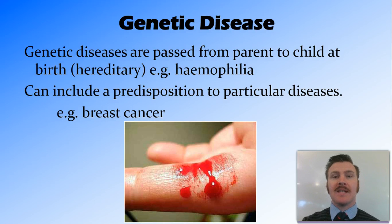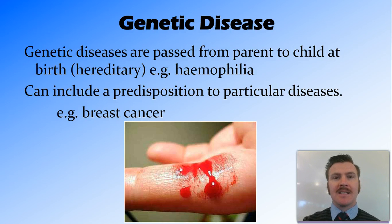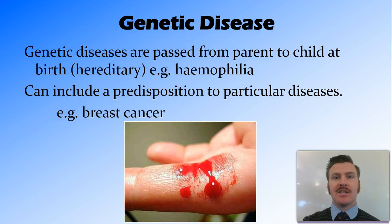Genetic disease can also include predisposition to a particular disease. In the last couple of years they've discovered what they refer to as the breast cancer gene — a gene that increases the likelihood of getting breast cancer — and you can actually be screened to see whether you've got this gene.